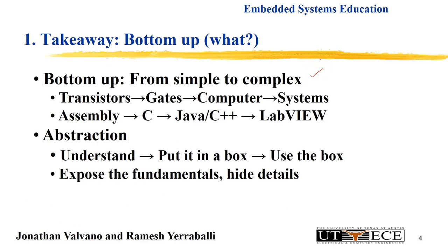That means we start with transistors to gates to computers to systems, assembly to C to C++ to Java. In this way we can understand the abstraction process — we first understand something completely, then we put that understanding in a box and use the box. That's the essence of system-level design.